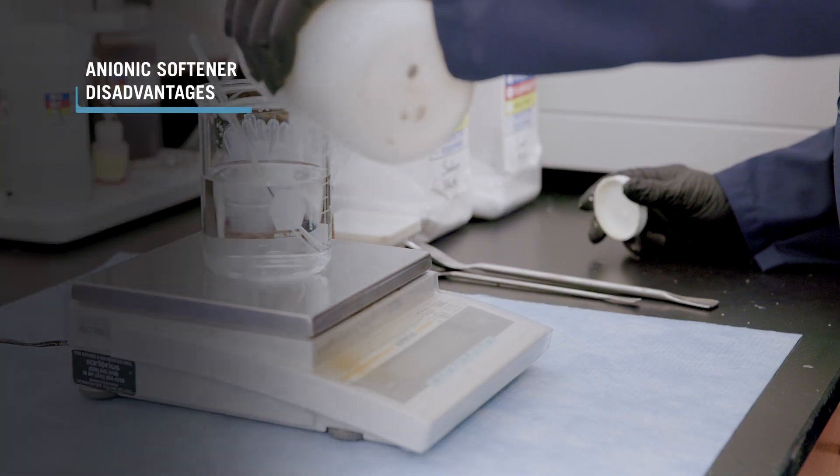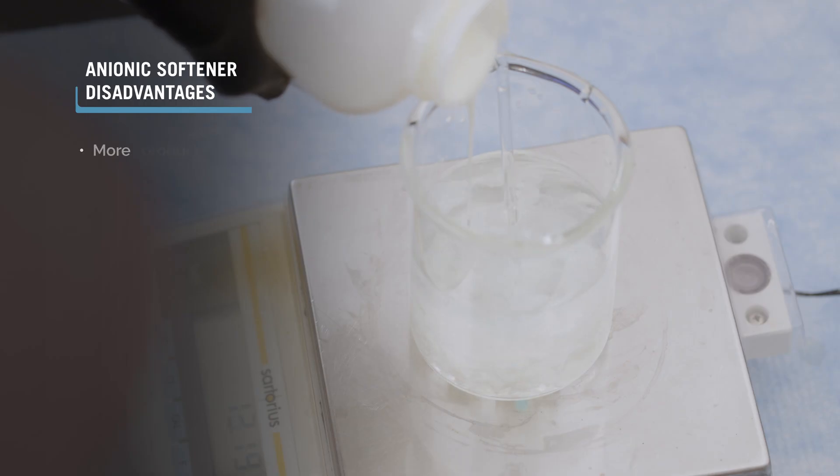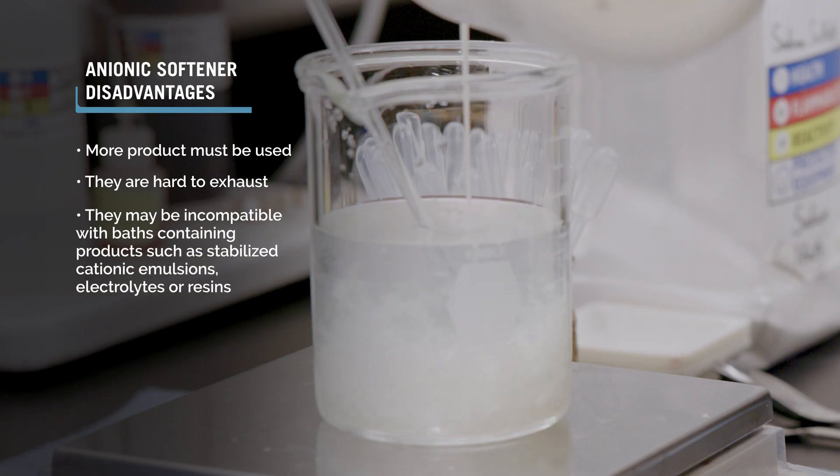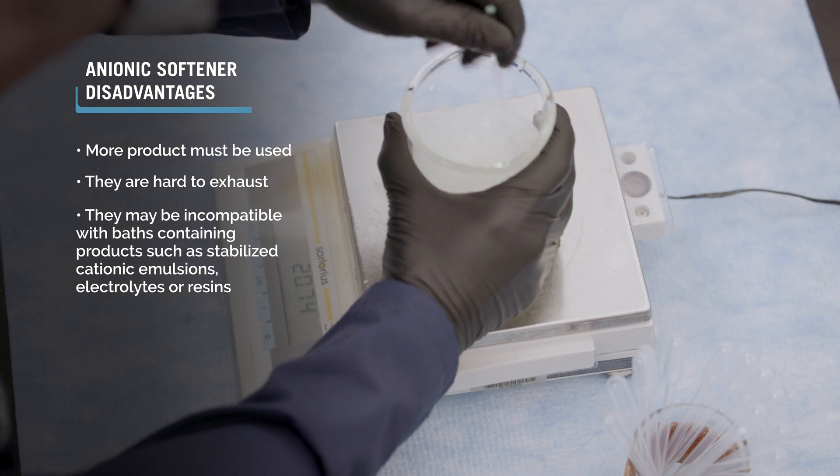Some disadvantages of anionic softeners include more product must be used, they are hard to exhaust, and they may be incompatible with baths containing products such as stabilized cationic emulsions, electrolytes, or resins.